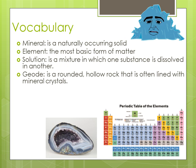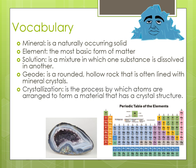Next, a geode is a rounded, hollow rock that is often lined with mineral crystals. Down at the bottom of this slide you see a geode — a rock where if you cut it in half and look in the middle, there are the mineral crystals. Crystallization: this is the process by which atoms are arranged to form a material that has a crystal structure. We're going to look at these crystal structures a little later.